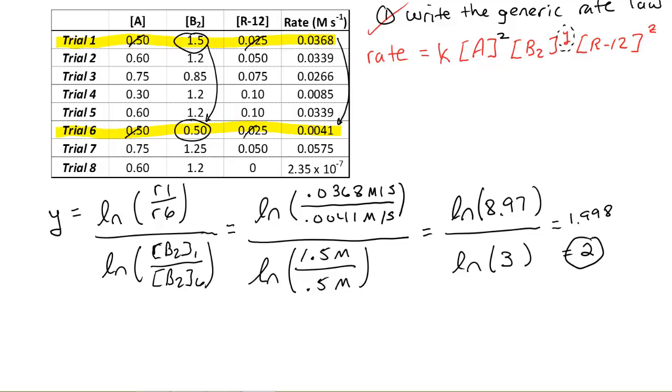So as you see, I've plugged in the values from the table of data, the experimental data, and I've obtained that the order for this particular thing, B2, is also 2. All right, so I can go up into my rate law up here, and I could change that to squared, and I'm now two-thirds of the way done with this part.